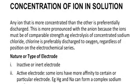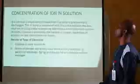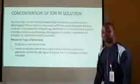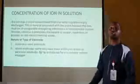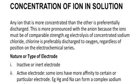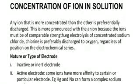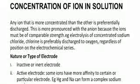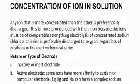Concentration of ions: any ion that is more concentrated than the other is preferably discharged. This is more pronounced with the anions, because they are of relatively close strength, unlike the cations that have a wide range of strength. In the electrolysis of concentrated sodium chloride, chlorine is preferably discharged over oxygen, regardless of the position on the electrochemical series, because the chloride ions are more concentrated in that solution.